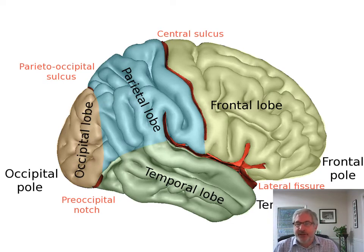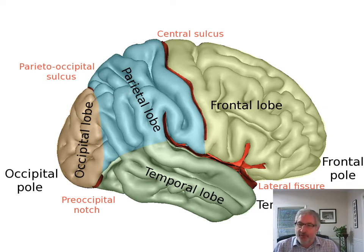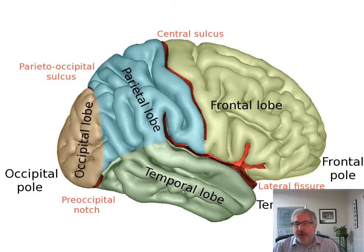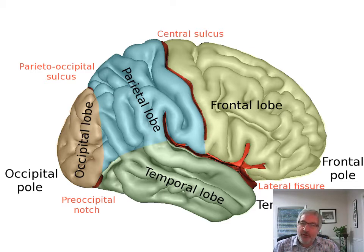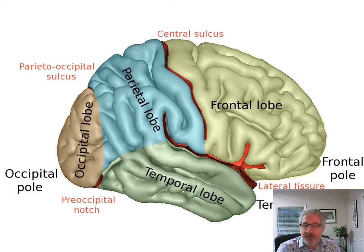Here we go. I'm getting into talking about functional areas of the brain. I just want to make sure that we're on the same page and show where everything is. I'm showing you the central sulcus — the frontal lobe — the central sulcus dividing the frontal lobe from the parietal lobe. Then you have the parieto-occipital sulcus, which separates the occipital lobe from the parietal lobe. And then you have the temporal lobe and the lateral fissure down there.